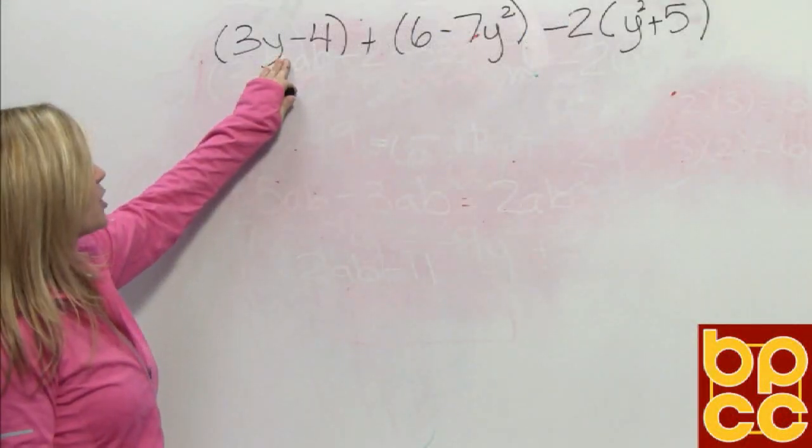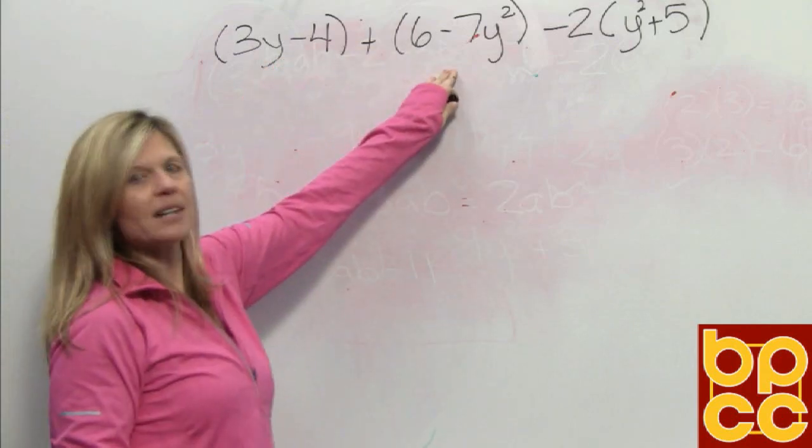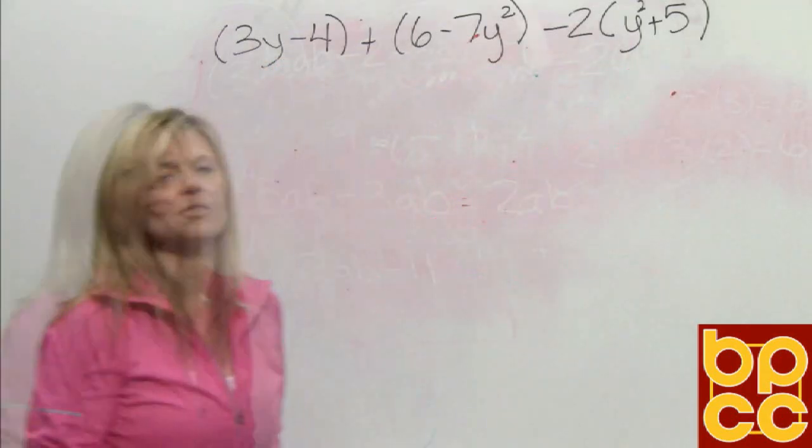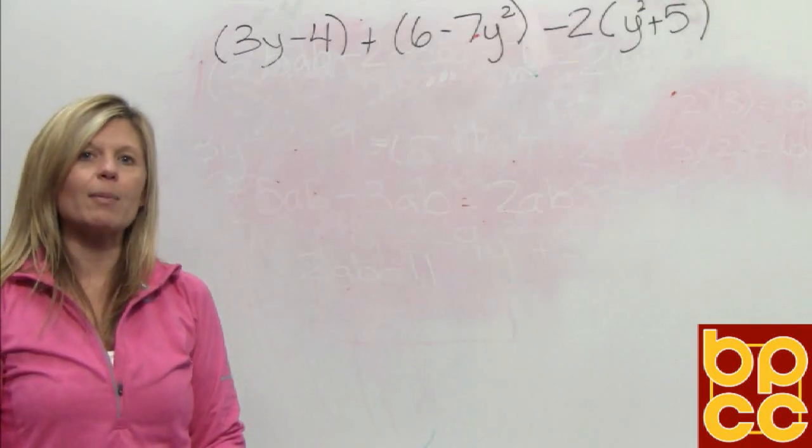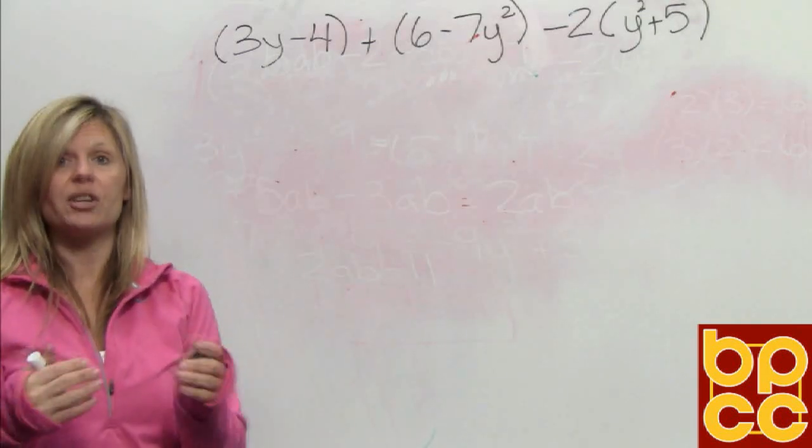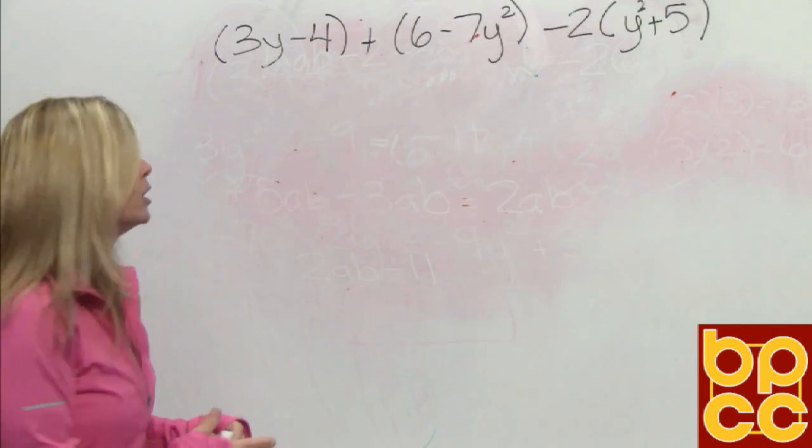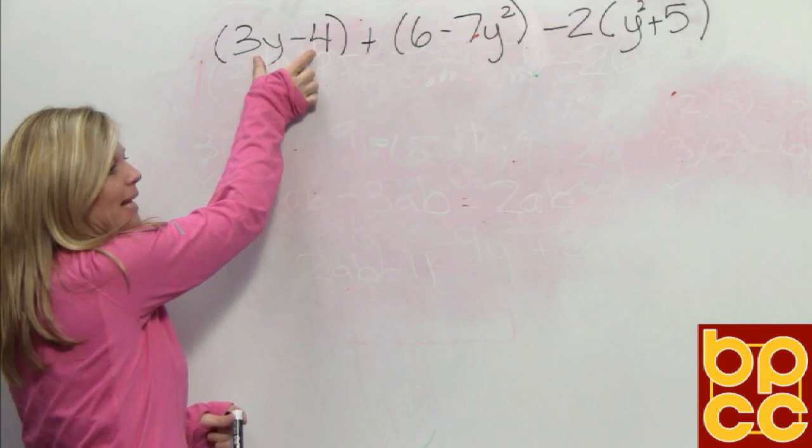I have 3y minus 4 in parentheses, 6 minus 7y squared in parentheses, and y squared plus 5 in parentheses. According to order of operations, we're supposed to put together things that are alike. According to order of operations, we're supposed to do parentheses first.